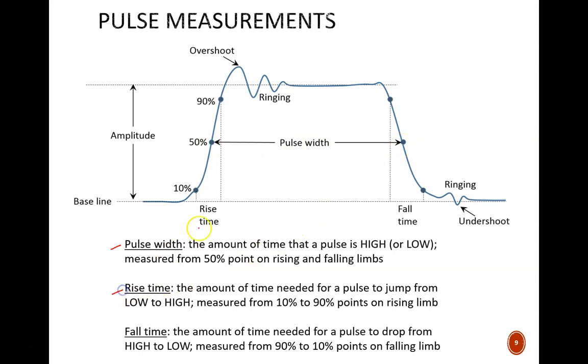Rise time is the amount of time needed for a pulse to jump from low to high. This is measured from the 10% to the 90% point on the rising limb. We do not use 0% and 100% because the buffer zone is needed to account for ringing.